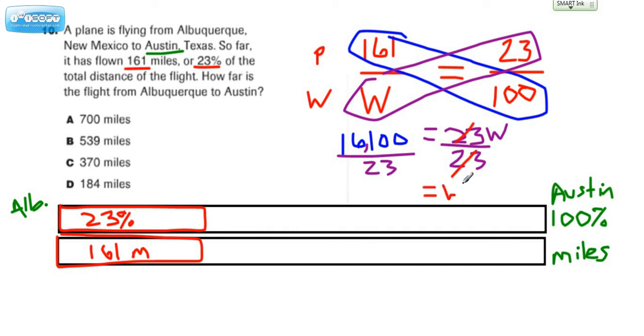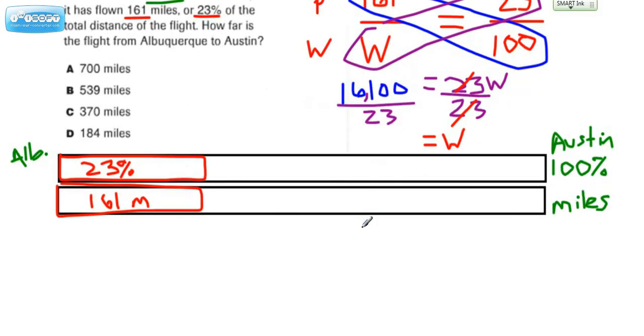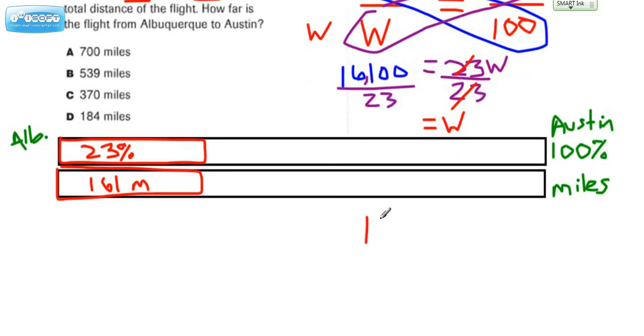The only thing you have left to do is to take this blue number, which is 16,100 and divide it by this number.